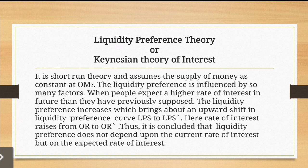This is a short-run theory. The 'S' in LPS stands for short run. That is why supply of money is assumed constant at OM2 — because in the short period, supply of money does not change.